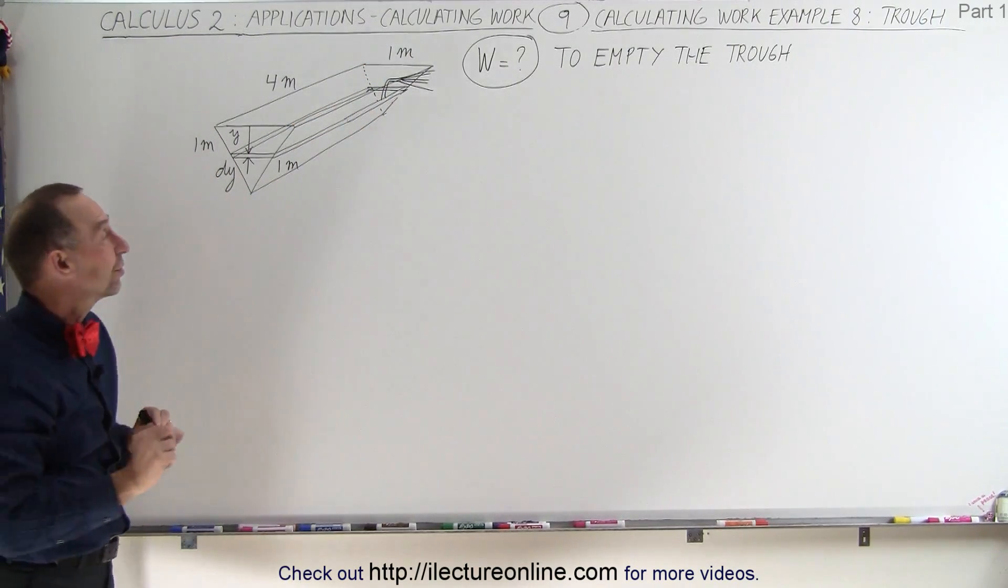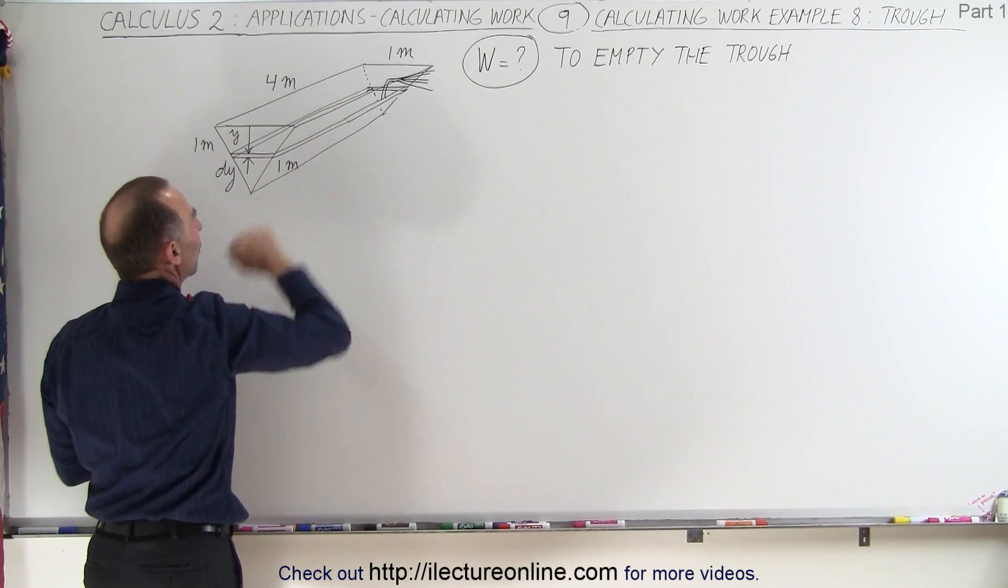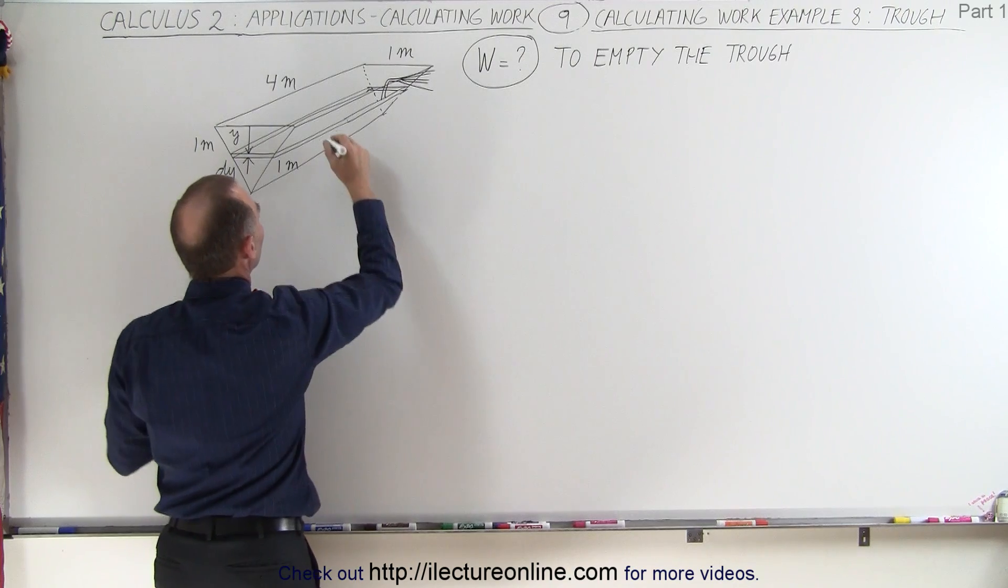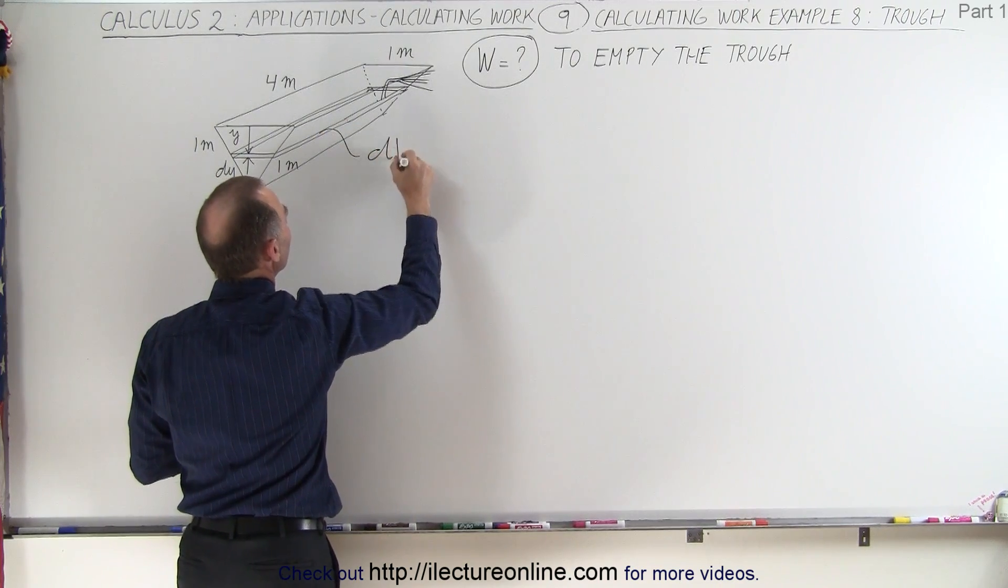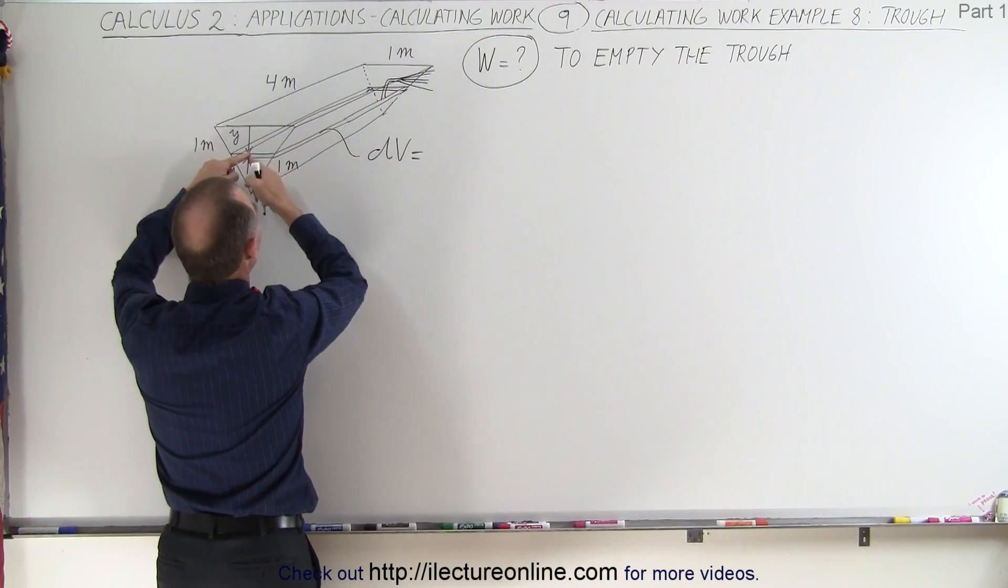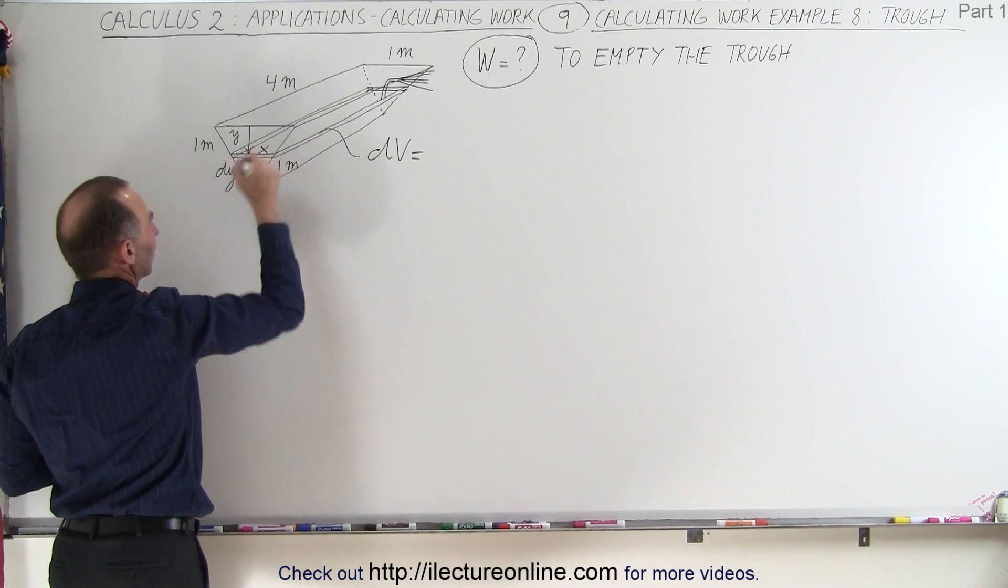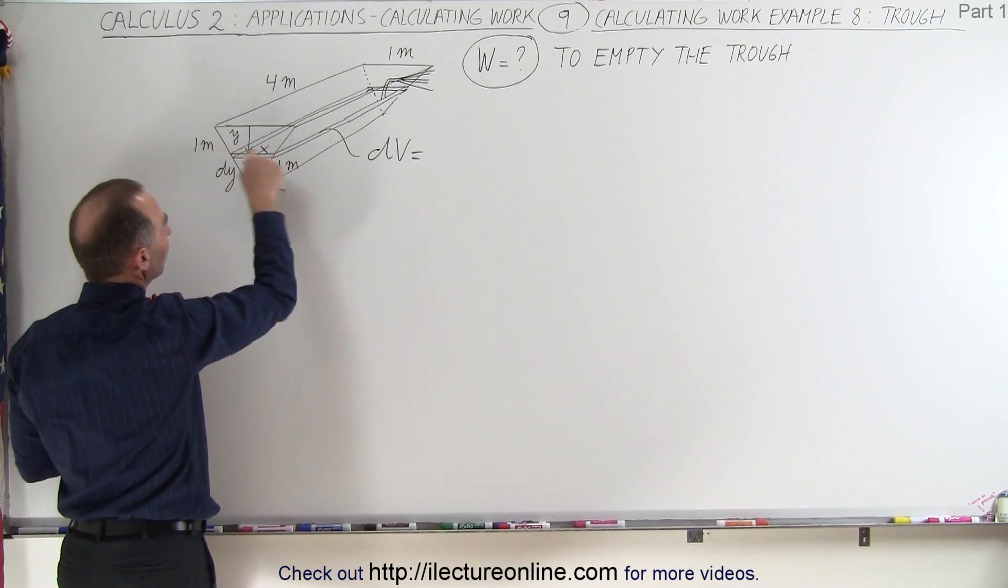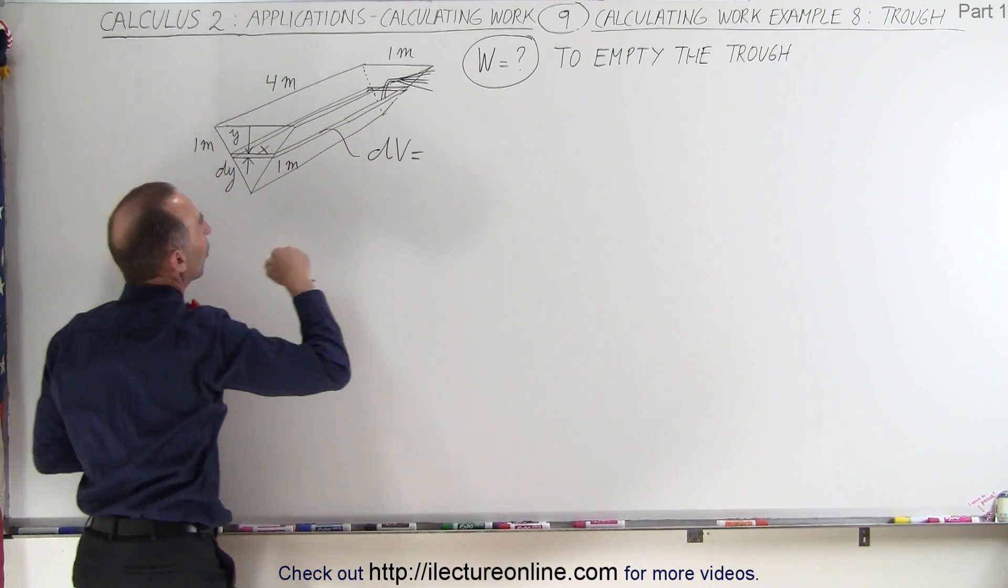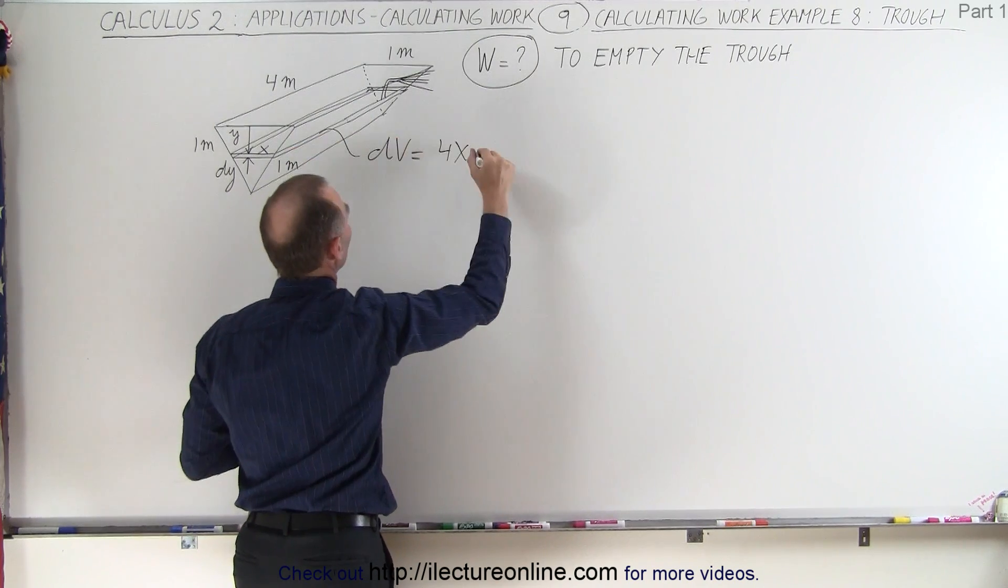So again, what we're going to need to do is calculate how much work it will take to remove a small slice of that water. That water will have a volume dV and the dV is going to be equal to the surface area, which is going to be the length times the width. Now the width is going to be a variable, so we'll call that x. The width will be x from there to there, and the length will be four. So the volume will be four x times the height, which is a dy.